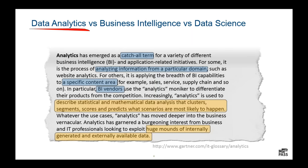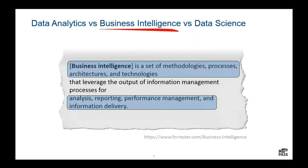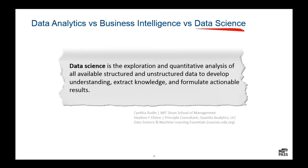Then we have a definition of BI from Forrester, which looks familiar to me as a longtime BI consultant and educator. Essentially, it is also a catch-all term for technologies and techniques that we use to transform our raw data from business processes into information in one way or another. Whereas the instructors of a data science course — one of whom teaches at MIT Sloan School of Management — define data science as something in which both exploration and analysis occur, typically including both structured and unstructured data.